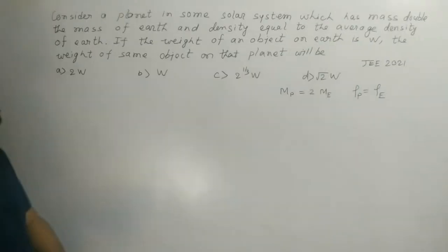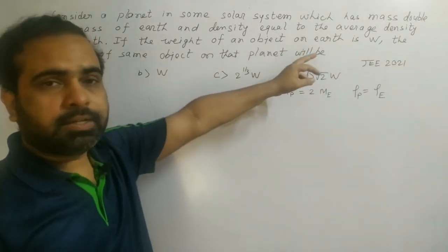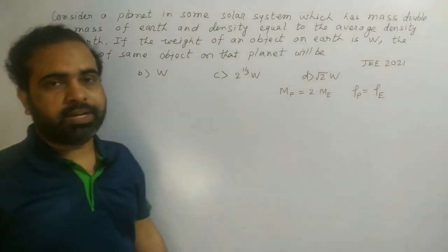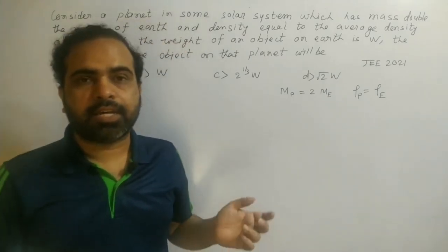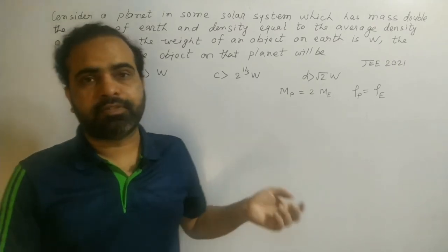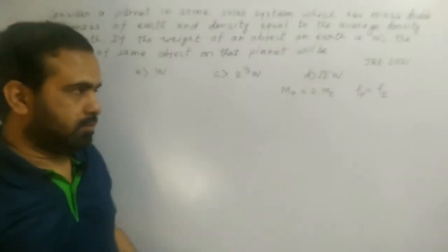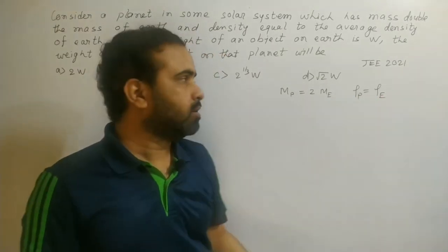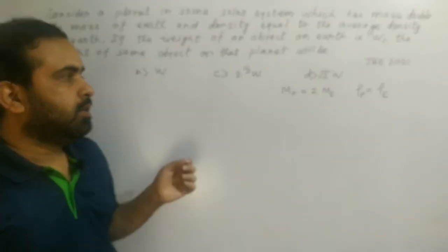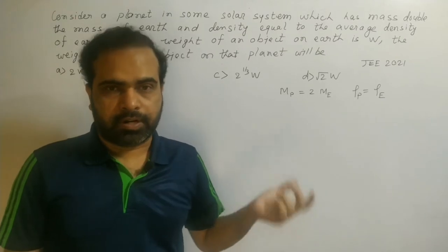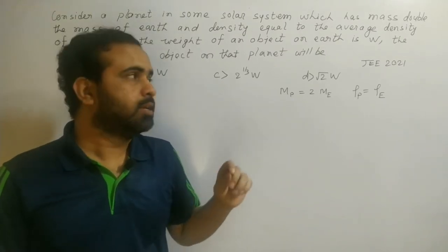These are the two pieces of information. If the weight of an object on Earth is compared to its weight on that planet — this is what is asked. Now, the density of both Earth and the planet are the same, but how can the masses be different? This means the volume of the planet must be different, and if the volume is different, then the radius of the planet will also be different.